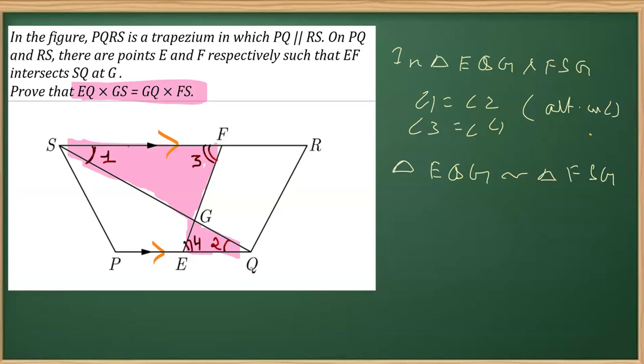Once these two triangles are similar, I can write their sides proportional. So if I write EQ in the left, then it should be FS from the other triangle. This equals QG over SG.